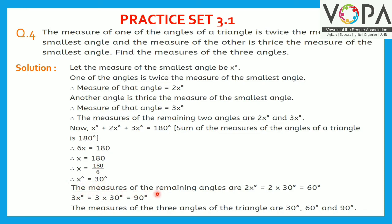Therefore, substituting x equals 30 degrees: 2x equals 2 times 30, which is 60 degrees, and 3x equals 3 times 30, which is 90 degrees. Therefore, the measures of the three angles of the triangle are 30 degrees, 60 degrees, and 90 degrees.